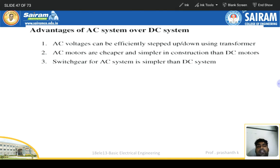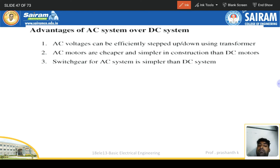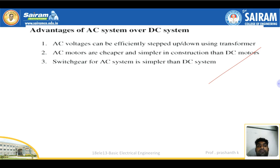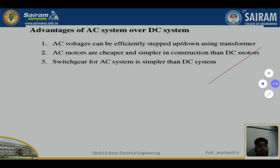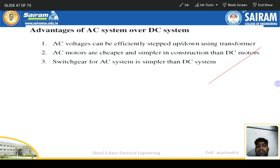Advantages of AC over DC: AC is more advantageous and is used in our homes. DC requires more switching circuits, whereas AC can be stepped up and stepped down using transformers. AC motors are cheaper than DC motors because DC motors have commutators and many more components, reducing efficiency. Switch gear for AC systems is simpler and less is required, since DC is more dangerous compared to AC.